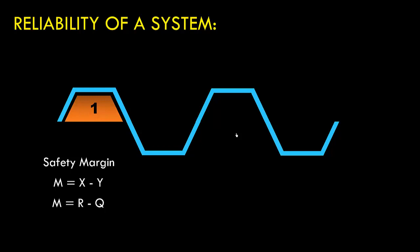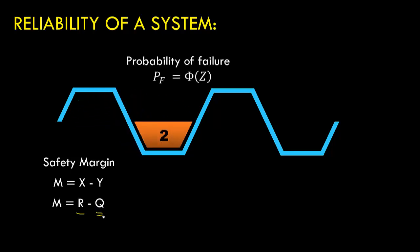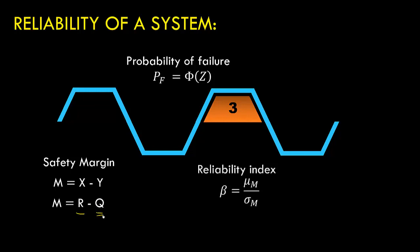M equals X minus Y, where X is the capacity and Y is the demand. Capacity is often written in terms of R and demand is written in terms of Q. Using the concept of safety margin we can calculate the probability of failure PF, which equals phi of Z, where phi is related to a standard normal distribution function. Another way to assess reliability is the reliability index beta, which equals mu_M divided by sigma_M.